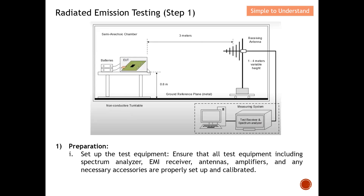Let's discuss the steps for Radiated Emission testing. Step 1 is preparation. You need to set up all test equipment — including the spectrum analyzer, EMI receiver, antenna, amplifier, and any necessary accessories — and ensure they are properly set up and calibrated. Make sure all equipment is present and calibrated before starting the Radiated Emission test.